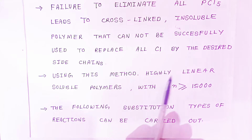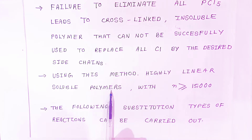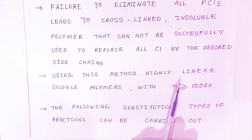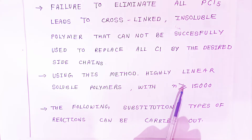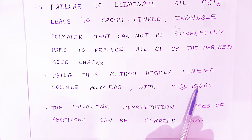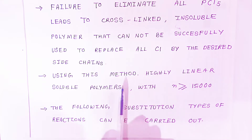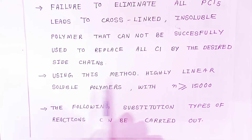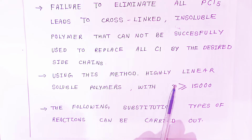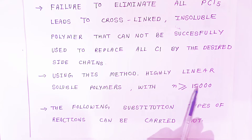Using this method, highly linear soluble polymers where n is always greater than 15,000 can be obtained. This way you can get the soluble polymers — the number of n will always be greater than 15,000.